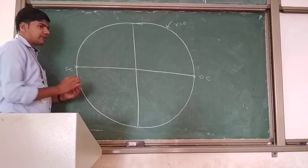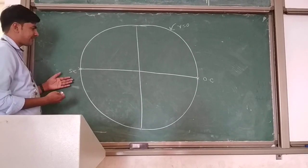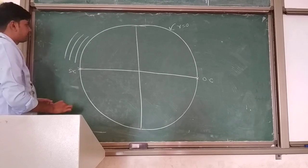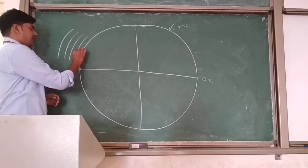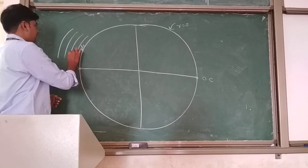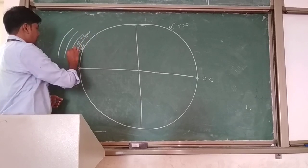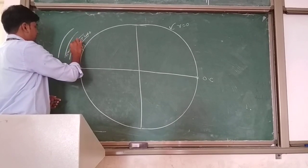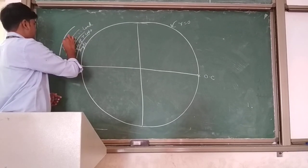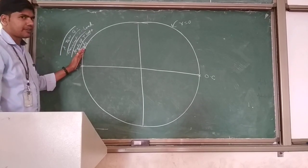Next will be the wavelength towards load and wavelength towards generator. How will you find wavelength towards load and generator? After the outer boundary, there are several scales in which you can find the angle of reflection coefficient, the angle of transmission coefficient, wavelength towards load, and wavelength towards generator.